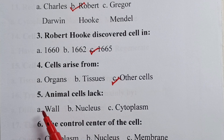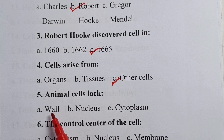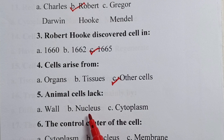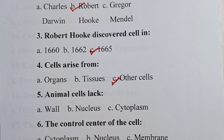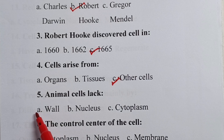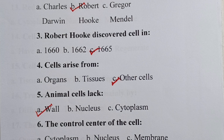Question five: animal cells lack — is it wall, nucleus, or cytoplasm? Your correct answer is wall. So, animal cells do not have a cell wall.